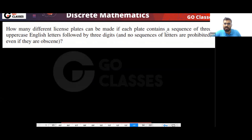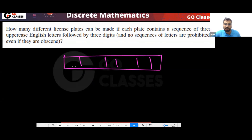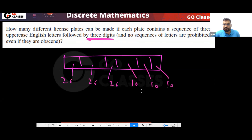Next, license plates: a sequence of 3 uppercase English letters followed by 3 digits, nothing prohibited. You must have 3 English letters — 26 ways, 26 ways, 26 ways — then 3 digits — 10 ways, 10 ways, 10 ways. So the answer is 26³ × 10³.